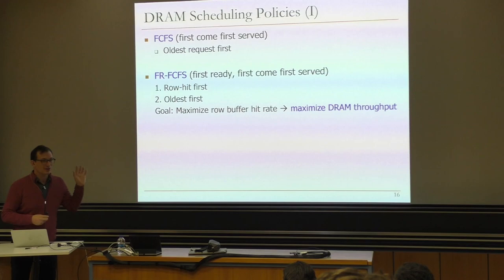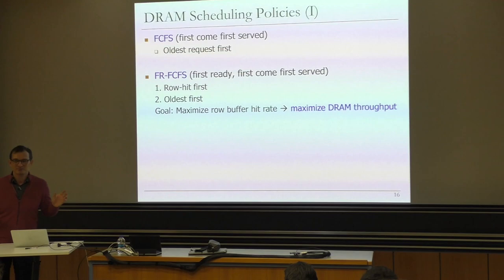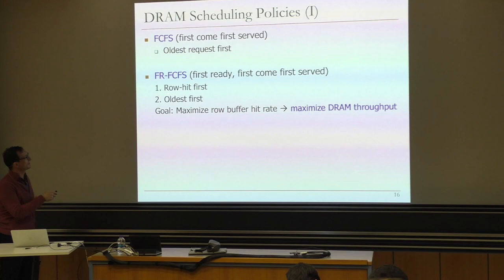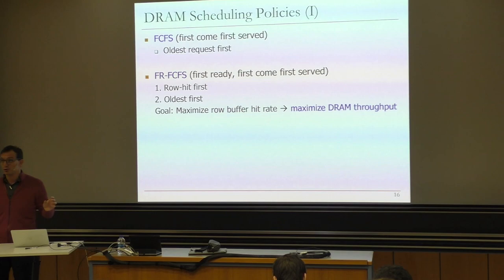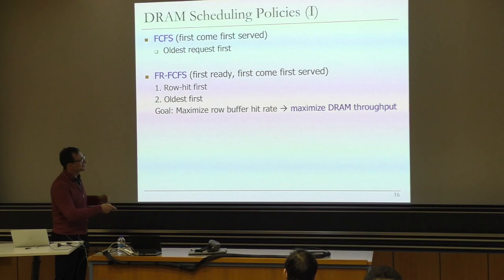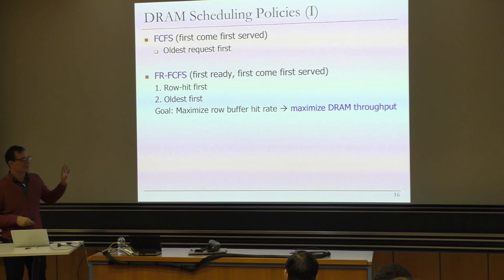We've seen some scheduling policies already. The simplest is FCFS — first come, first serve — you just schedule requests in the order they arrive. It turns out it's not very high performance. As a result, people developed the First-Ready First-Come-First-Serve policy, which prioritizes row buffer hits over other requests, and all else being equal prioritizes older requests. The goal is to maximize the row buffer hit rate, because row buffer hits have much shorter latency than row buffer misses or conflicts. This maximizes DRAM throughput and also minimizes latency, assuming these are the only things that affect latency.